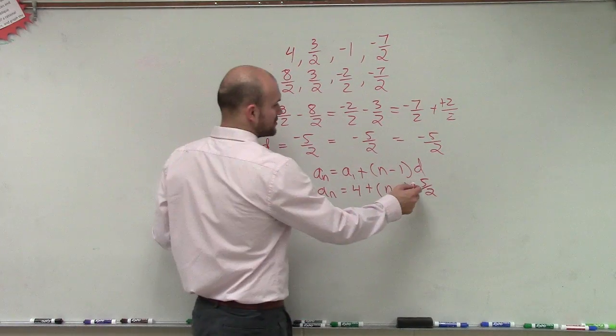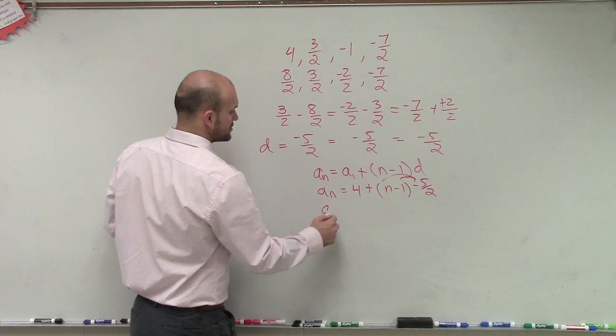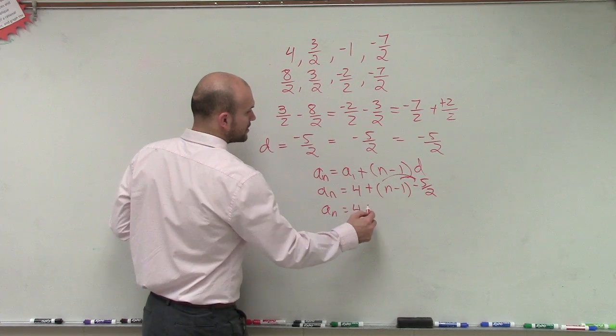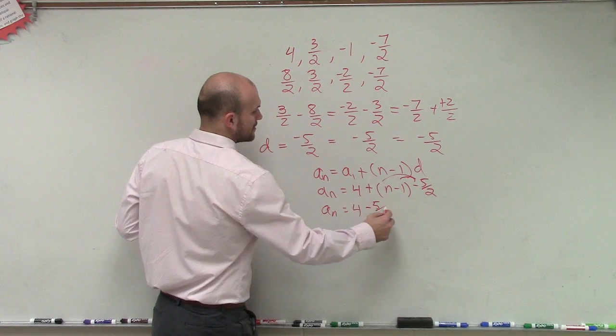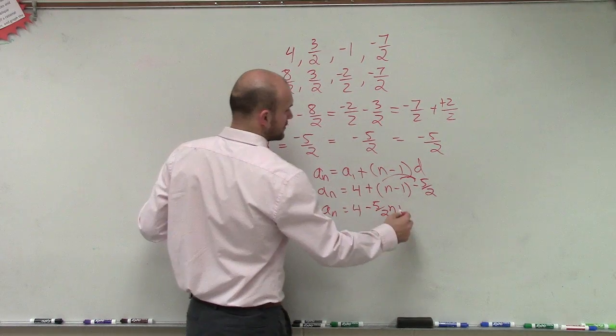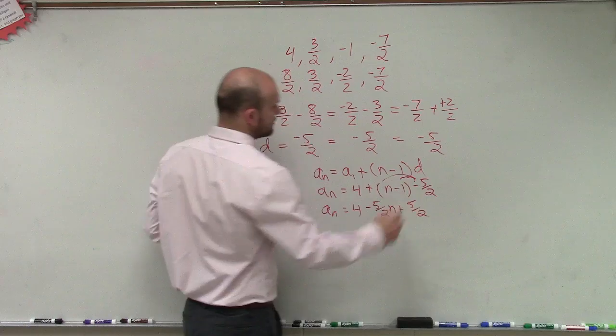So now what we can do is apply the distributive property. So we have a sub n equals 4. This is now going to be minus 5 halves n plus 5 halves.